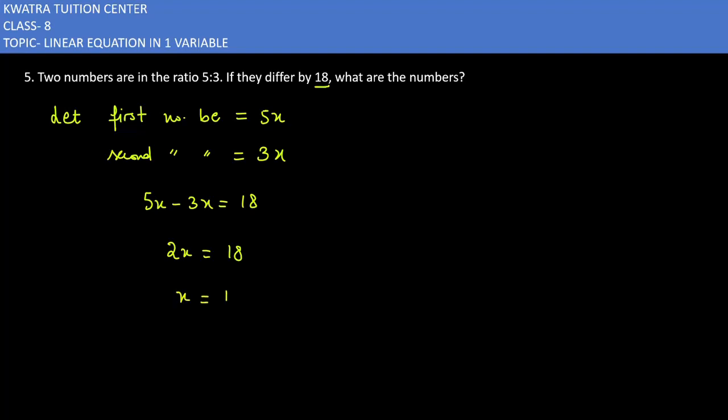And x which is equal to 18 by 2, and 18 by 2 is what? Your answer is 9. And we have to find out the numbers. We have to take out x but we have to find out numbers.